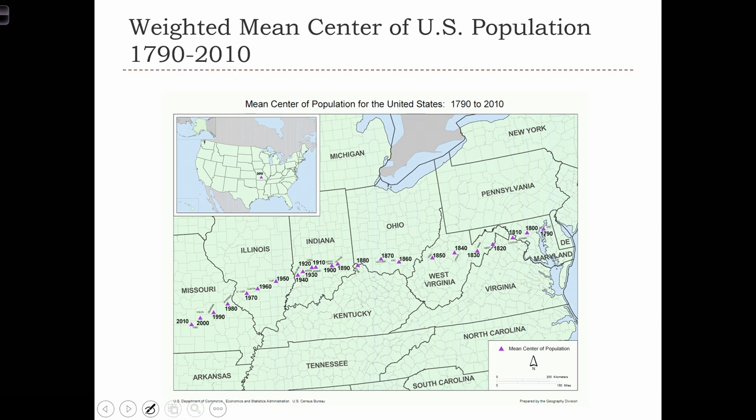In practical purposes, we can use the weighted mean center to track the location of the population over time. So in this case study, what we are looking at is the mean center of the U.S. population between 1790 and 2010. This is the mean location of the U.S. population weighted by population size in 1790. And as you can see, with the westward expansion of the population and the opening up of the west, we have a very consistent westward trend of migration of the mean center.